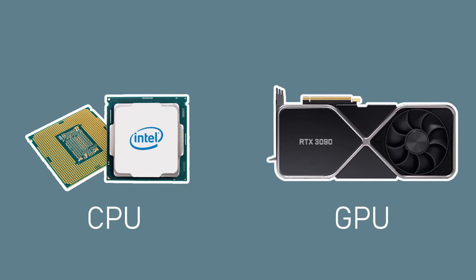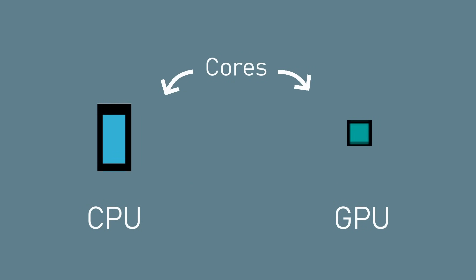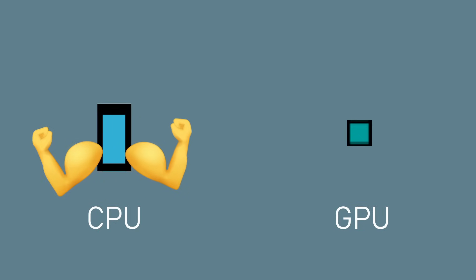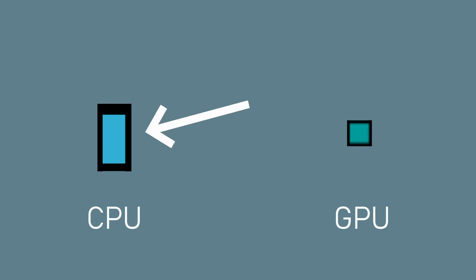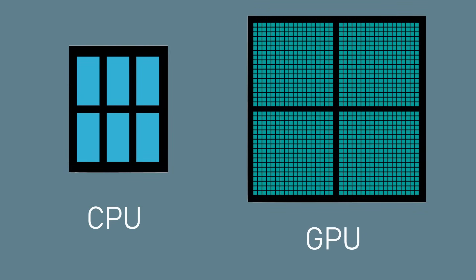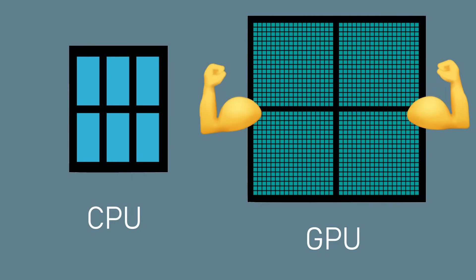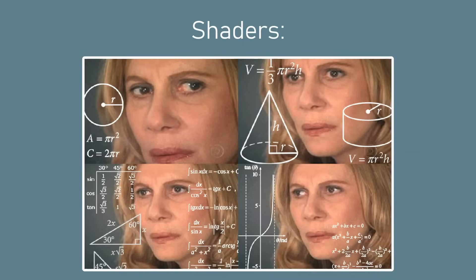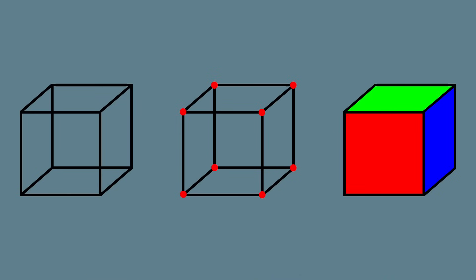At its simplest, a shader is a chunk of code that gets run on the graphics processing unit or GPU instead of on the central processing unit or CPU. Both the CPU and GPU are made up of cores where the processing is actually done, and each CPU core is much faster, more powerful and more versatile than a GPU core. So why would we want to run code on the GPU instead of the CPU? Well, the GPU has hundreds of cores where the CPU only has a handful.